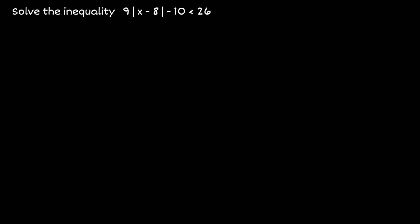Let's say we're given the following absolute value inequality and we would like to solve for it. The first thing we want to do is make sure that the absolute value is by itself, which in this case it's not. Notice that on the left-hand side we are subtracting 10 and we're also multiplying by 9, so let's start by getting rid of those two values.